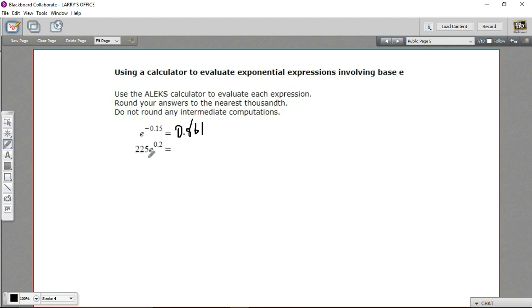Let's try this one. 225 times e to the 0.2. Remember, we want to evaluate this exponent first, and it's only e that's being raised to the 0.2 power. Then we multiply it by the 225.